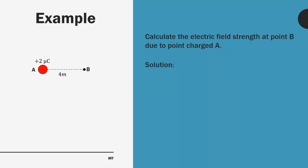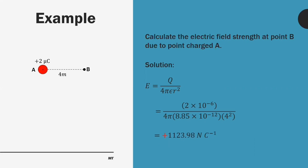Here's an example of how we can use the formula. We need to calculate the electric field strength at point B due to point charge A. The point charge A is a positive two microcoulomb. To obtain the electric field strength at point B, which is four meters away from point charge A, we use the formula, substitute the value, and we get the value of 1,123.98 newton per coulomb. The positive value indicates that the electric field strength is applying force in the direction of increasing r, or away from point charge A.